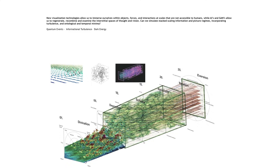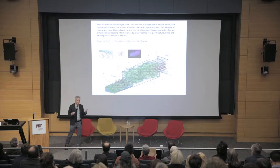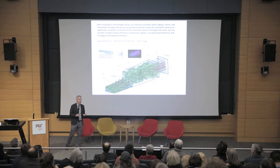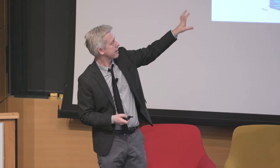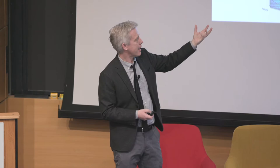Is it possible to use new visualization technologies like electron microscopes or dark energy surveys to immerse us within these force relations and model it in a kind of interstitial way? Can we simulate stacked, scaling informational and picture regimes incorporating turbulence and ontological and temporal minima? I've shown only five of the picture states stacked against each other, but what I imagine is that at a certain point they'd start to become legible to each other in time in a way they could never be in space.